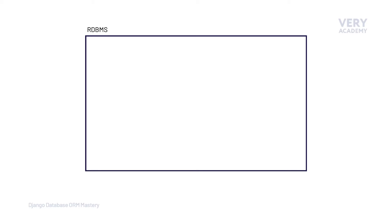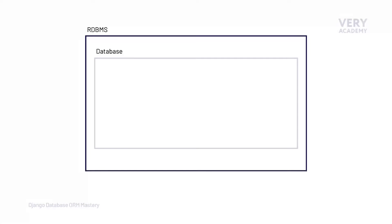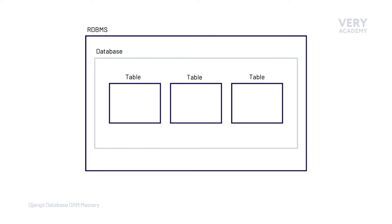The first essential component of building a database is database software, more commonly known as a relational database management system, which provides the tools to build and manage our database. Popular relational database management systems include MySQL and PostgreSQL. Within our relational database management system we construct databases. I like to think of a database as a container where we logically organize tables and establish relationships.